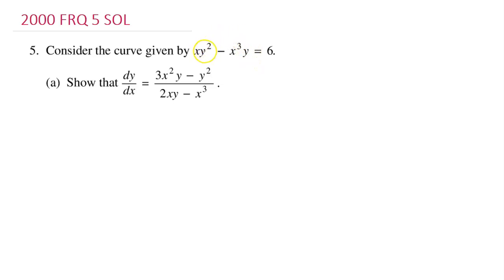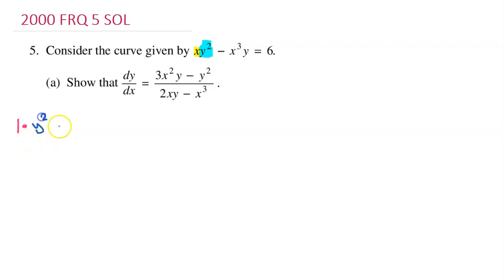Let's take the derivative of both sides of this equation with respect to x. Starting with the first term, I'm going to need to use the product rule, and I'm going to look at it as x times y squared — those are the factors. So according to the product rule, we will first take the derivative of the first factor. The derivative of x is just 1. The second factor, we will just leave it alone, so I'm going to write y squared unchanged.